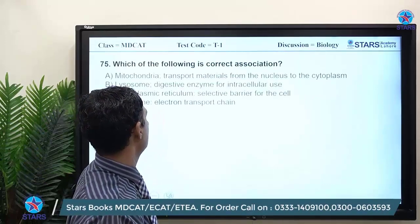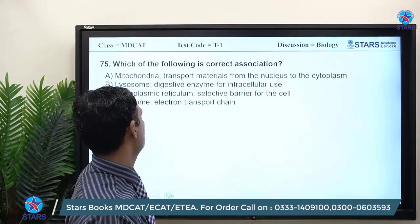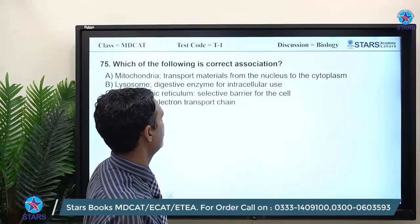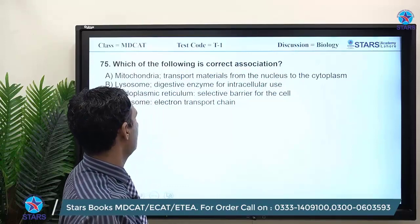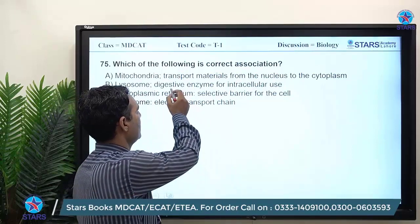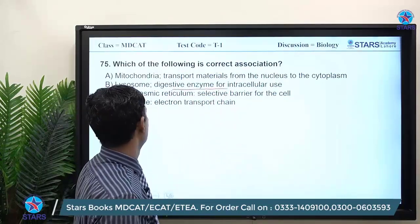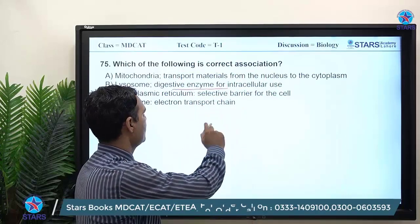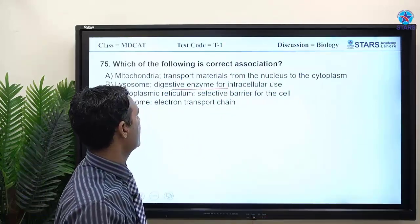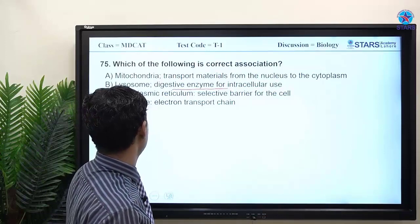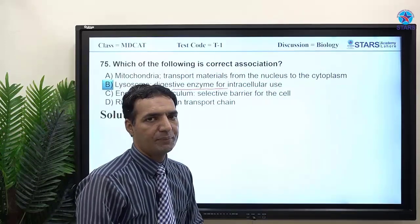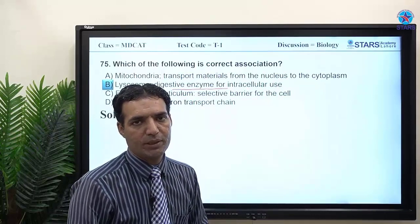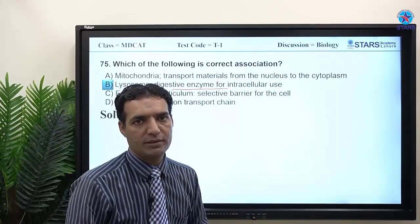MCQ 75: which is the correct association? Mitochondria for transport of material — incorrect. Lysosome with digestive enzymes — correct. Endoplasmic reticulum as selective barrier — incorrect. Ribosomes for electron transport — incorrect. Therefore Beta (lysosome–digestive enzymes) is the right answer.